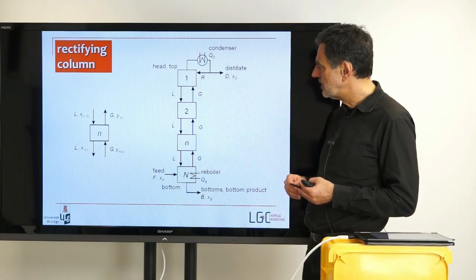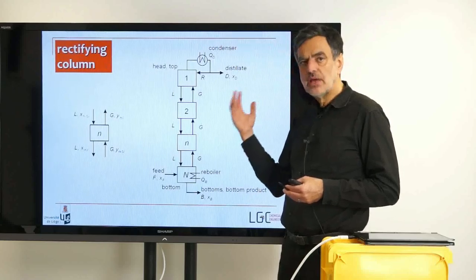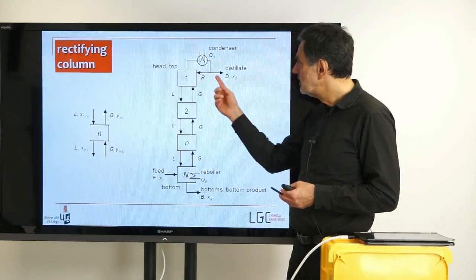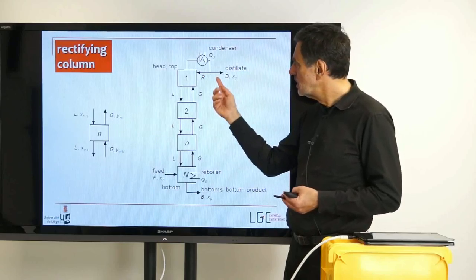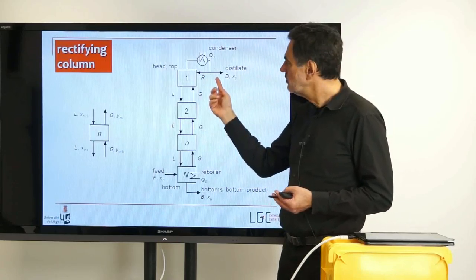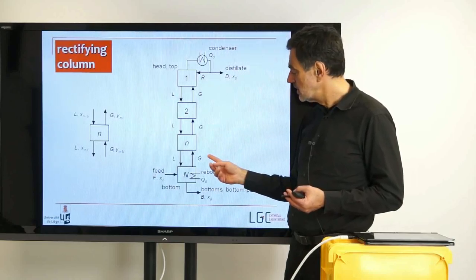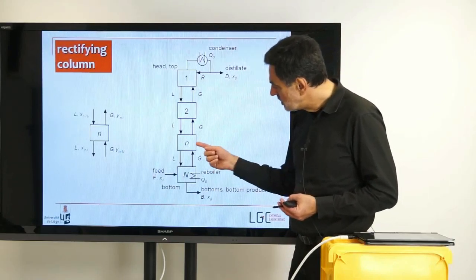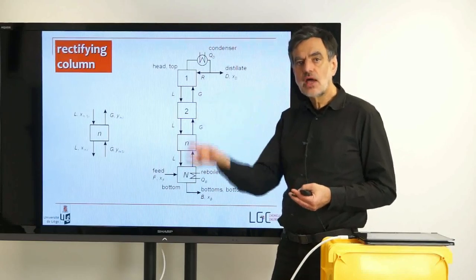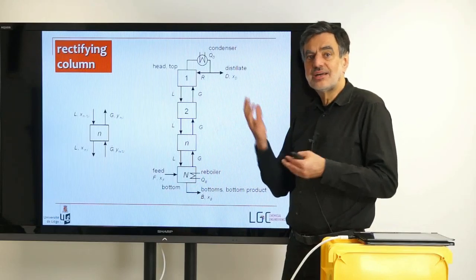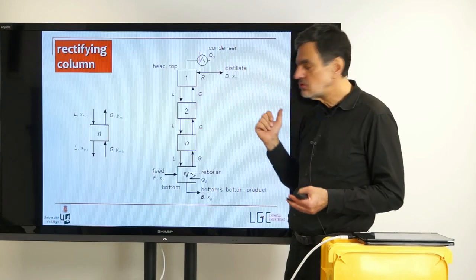Here we have only a rectifying section. If we set up the balance for the rectifying part, we can set it up more or less identically to what we have done for the rectification column. We define a control volume which intersects the distillate flow rate and below some theoretical stage. Because of that, the entering and leaving streams are identical to those used in deriving the rectifying line, so the rectifying line is identical to what we have derived — we don't have to re-derive anything.